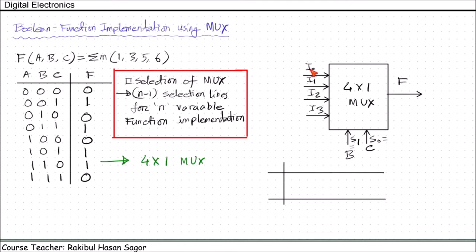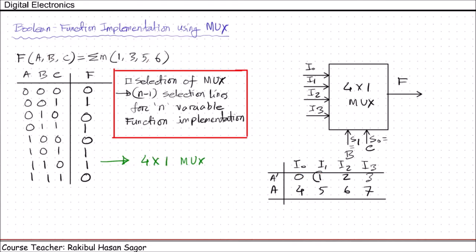Now, with the remaining variable A, we need to list the inputs of the multiplexer in a certain way. For all four inputs I0, I1, I2, I3, write A prime and A — that means 0 and 1 for the A variable — then write the decimal values 0, 1, 2, 3, 4, 5, 6, 7. This function has high value at positions 1, 3, 5, 6. Circle those positions: 1, 3, 5, 6. These are the positions representing the minterms.